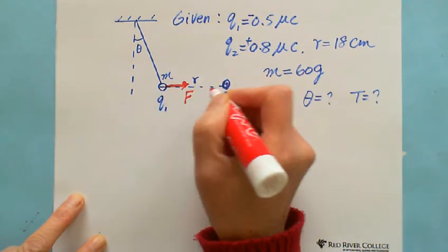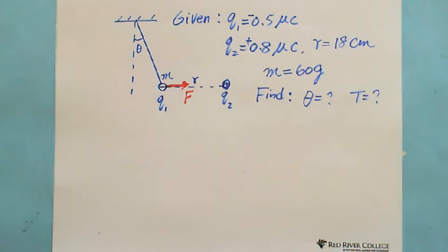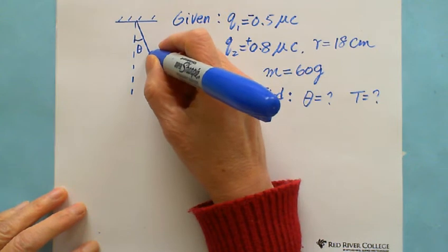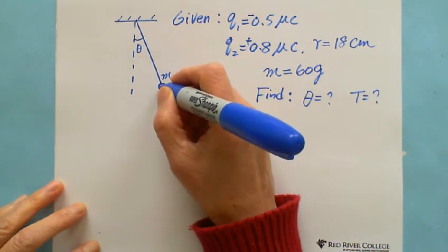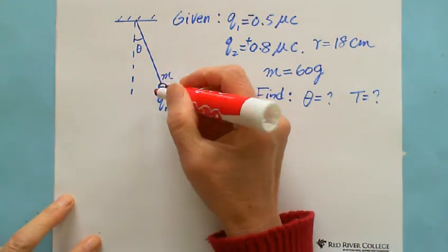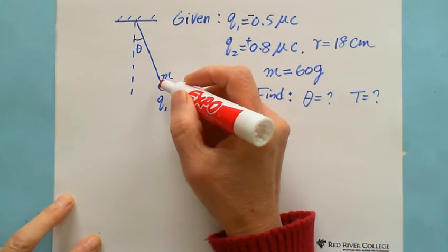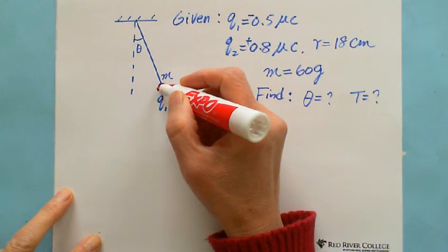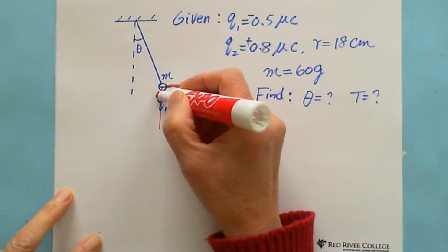There's F between these two charges, and then there is another tension force, and also there is gravity because we're given 60 grams. So Q1, the small insulated ball, can be balanced at this situation.